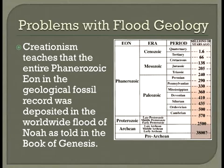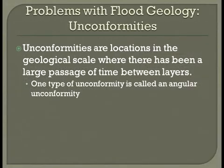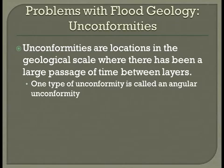In this series we're going to take a look at just a few of those, and we're going to start in this first presentation with one that we call angular unconformities. What are unconformities? Unconformities are locations in the geological scale where there's been a very large passage of time between layers. We actually have three: angular unconformities, nonconformities, and disconformities. We're only going to look at one — the angular unconformity — which serves the purpose of illustrating how unconformities disprove flood geology.